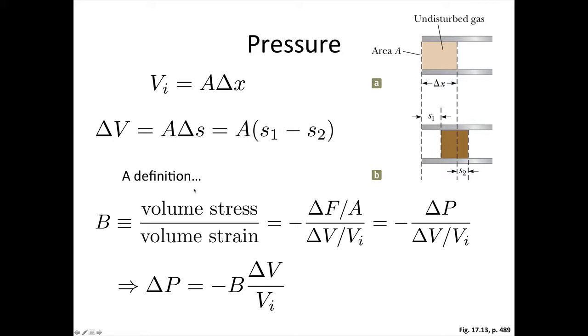OK, now to simplify this, we need to use a definition, which probably those of you doing engineering will come across a fair amount. We're going to be looking at the bulk modulus, which is given the symbol B. And that is defined as the volume stress over the volume strain.